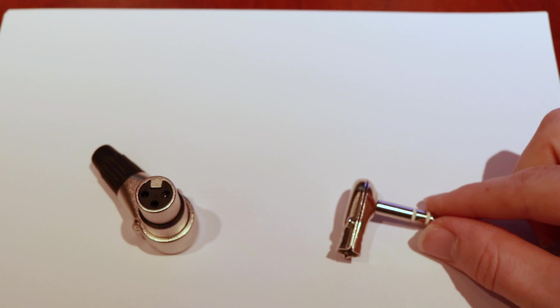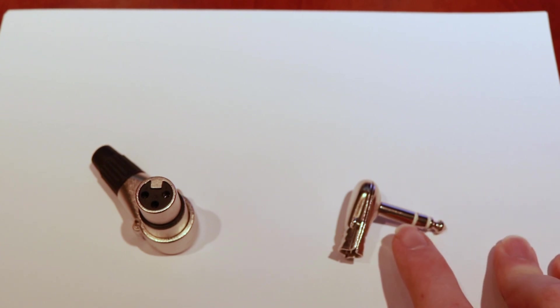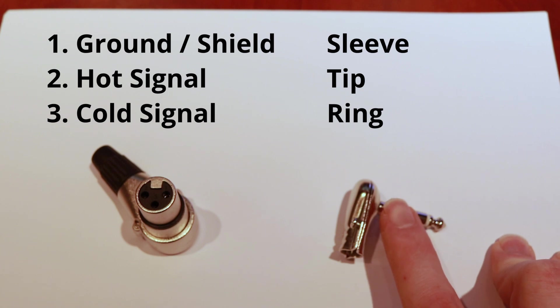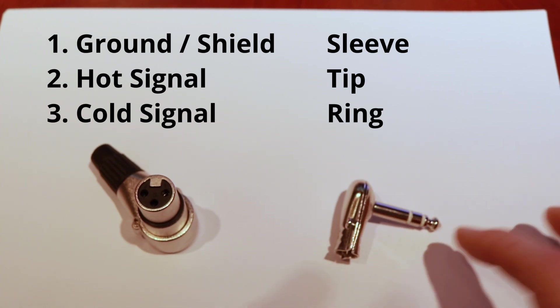That means instead of just a tip and ring connector for the other end, we're going to use this quarter inch tip ring sleeve. Now this has the same pin out of one, two, three, only my one is going to be my shield and my ground is going to be back here. My two is going to be my hot signal at the tip of the connector, and my three is going to be that ring inside the middle of the connector.